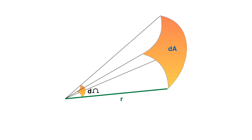Now the relation between d omega, dA, and r can be given by the expression: d omega equals dA upon r square. Steradian is the unit of solid angle.